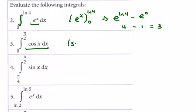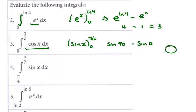Integrating cos x: cos x goes to sin x, between π/2 and 0. So we want to do it in degree form — the sin of 90 minus the sin of 0. From your unit circle, the point at 90 degrees is (0, 1), so the sin of 90 is 1 and the sin of 0 is 0, giving us 1.